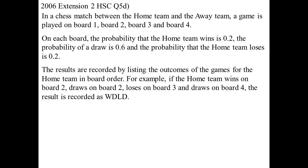Here's another extension 2 one, and this one you really got to read carefully. Sometimes the language in these questions is what tricks you up. So chess match between a home team and an away team, and there's four boards that they're playing on. Now on each of the boards, the probability of the home team winning is 0.2, a draw 0.6, and the home team losing therefore is 0.2, because they've all got to add up to be one. The way they record the results is simply by writing down the letter of what happens, whether it be a win, a draw, or a loss. So the example they've given there, home team wins on board one, draws on board two, loses on board three, draws on board four, we'd say WDLD. That's the result.